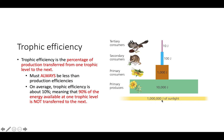For example, if we have 1 million joules of sunlight, only 10% of that is going to be able to actually be transferred to our primary producers, which is why we have 10,000 joules in our primary producers. Then another 10% of that is what's available to be transferred to the primary consumers. So by the time we're at primary consumers, we've already dropped from a million joules to only 1,000 joules. Then it will only transfer 10% again to our secondary consumers — now we're down to 100 joules.